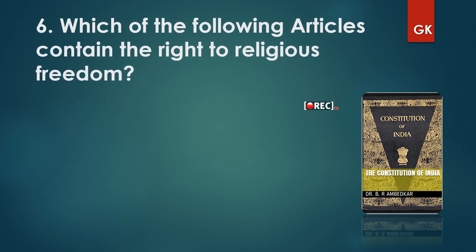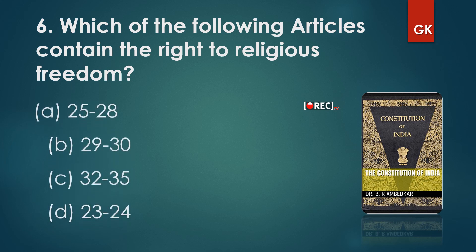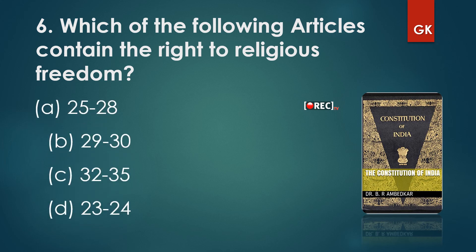Question 6: Which of the following articles contains the right to religious freedom? Options: Articles 25–28, Articles 29–30, Articles 32–35, or Articles 23–24. The answer is Articles 25 to 28. Articles 25–28 contain the right to religious freedom in the Constitution.